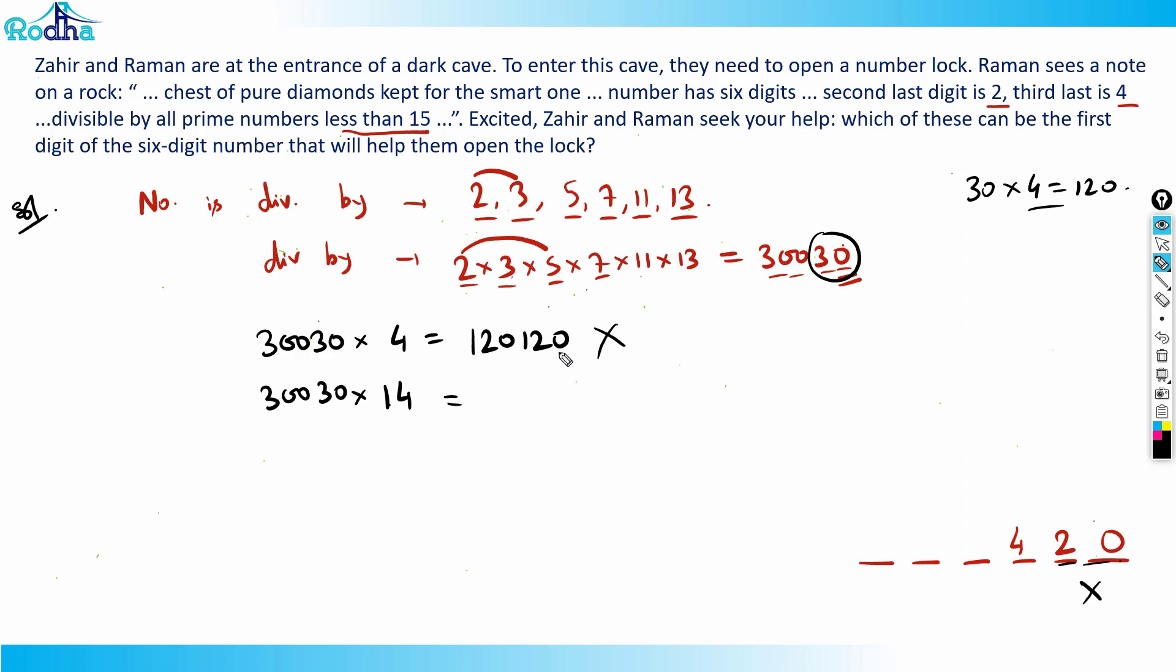If you try out 14, if you put 14, it becomes into 10 is 300, and into 4 is 120, that becomes 420. But that must satisfy this. So obviously 4-2-4-2-0, that means into 14 times. Now so 42420 should be your number.